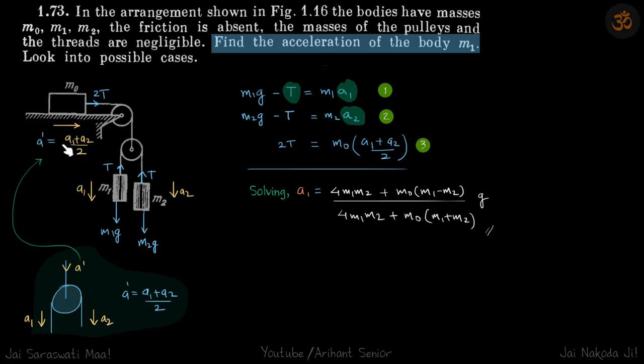So now we just need to write F = ma for all three blocks, and our variables for these three equations are a1, T, and a2.